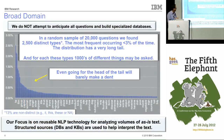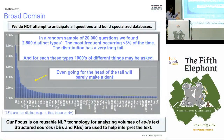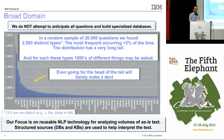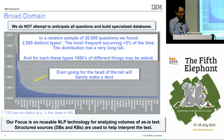To illustrate the broad domain: a graph with answer type on the x-axis and fraction of Jeopardy questions on the y-axis shows a long-tail distribution. The most frequent answer type — a male person — accounts for only 2.5% of questions. There are many different answer types, each with very small fractions. You won't make much progress by building tables for each answer type, since the domain is so broad and the distribution so long-tailed.